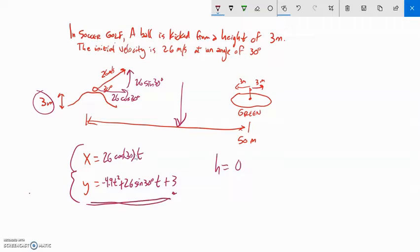That's this y part, so I'm going to think about negative 4.9 t squared plus 26 sine of 30 t plus 3. When is that equal to zero?